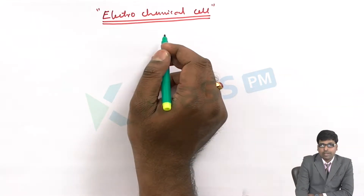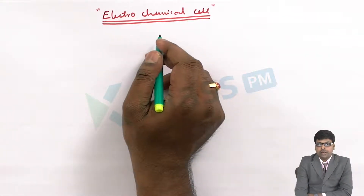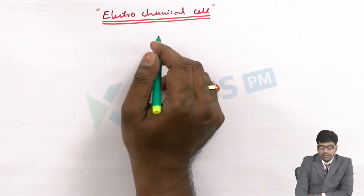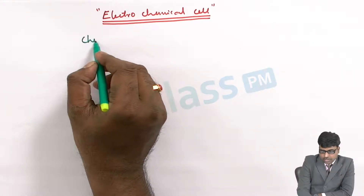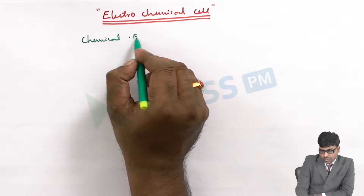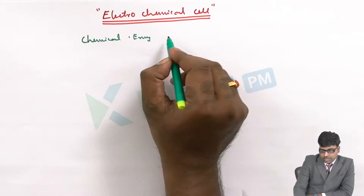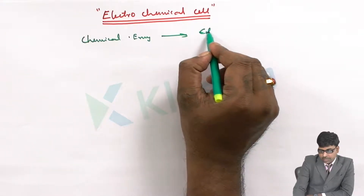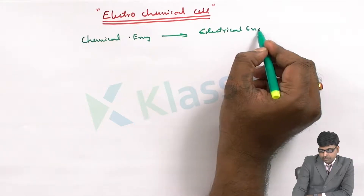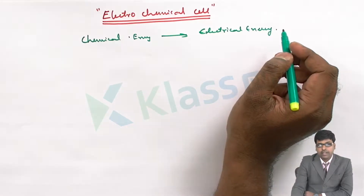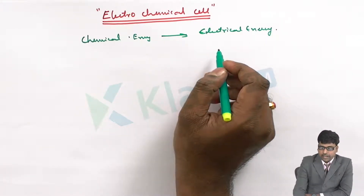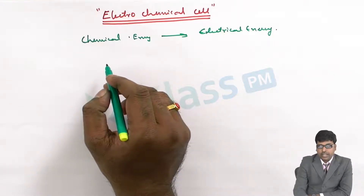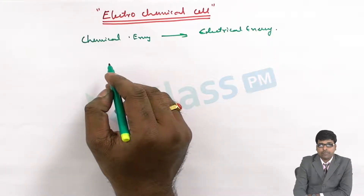An electrochemical cell is a cell in which chemical energy converts into electrical energy. In an electrolytic cell, electrical energy converts into chemical energy.